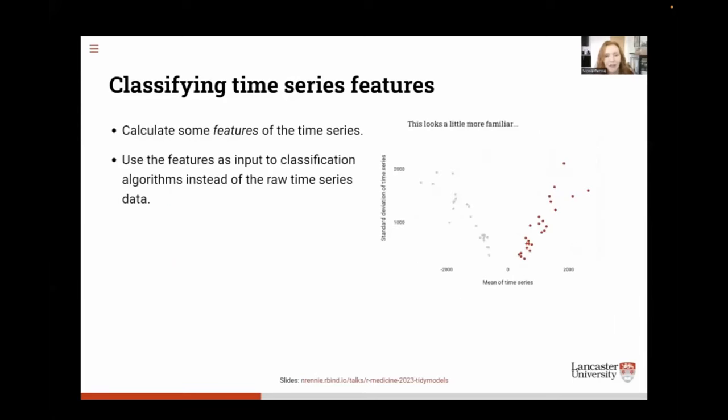Instead, we calculate some properties of the time series, some features. If you want to keep it simple, that's properties like the mean, the standard deviation, the slope, for example. And we use those features in classification algorithms instead of the raw data.